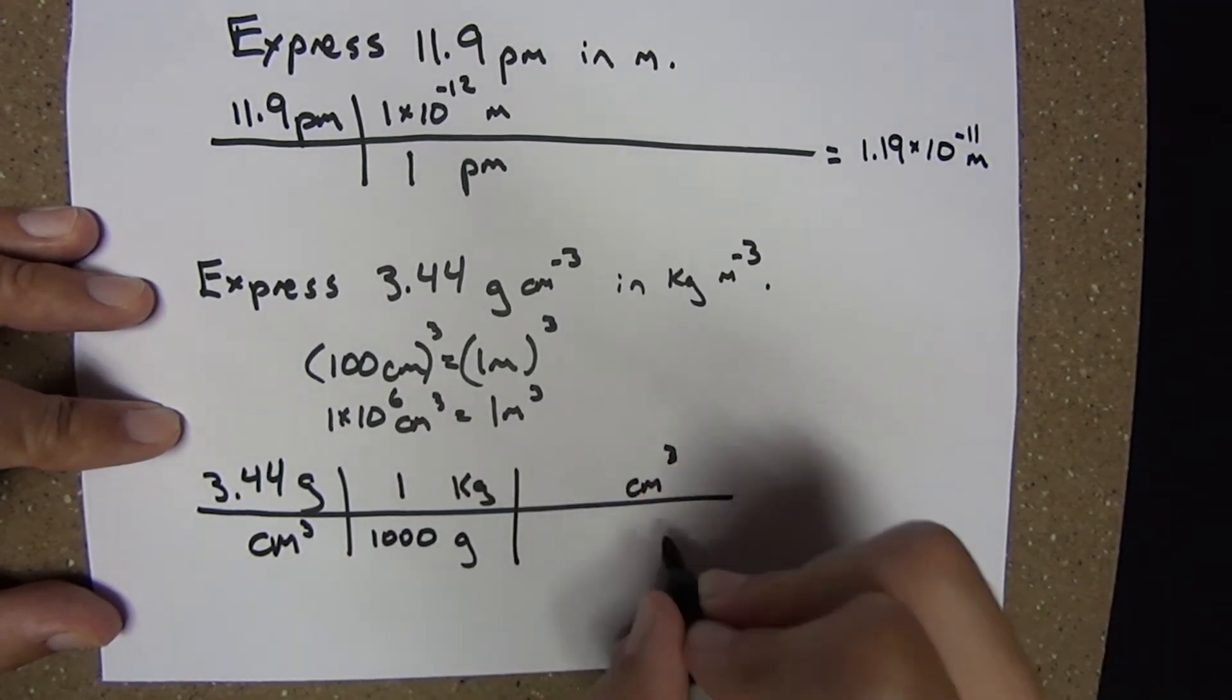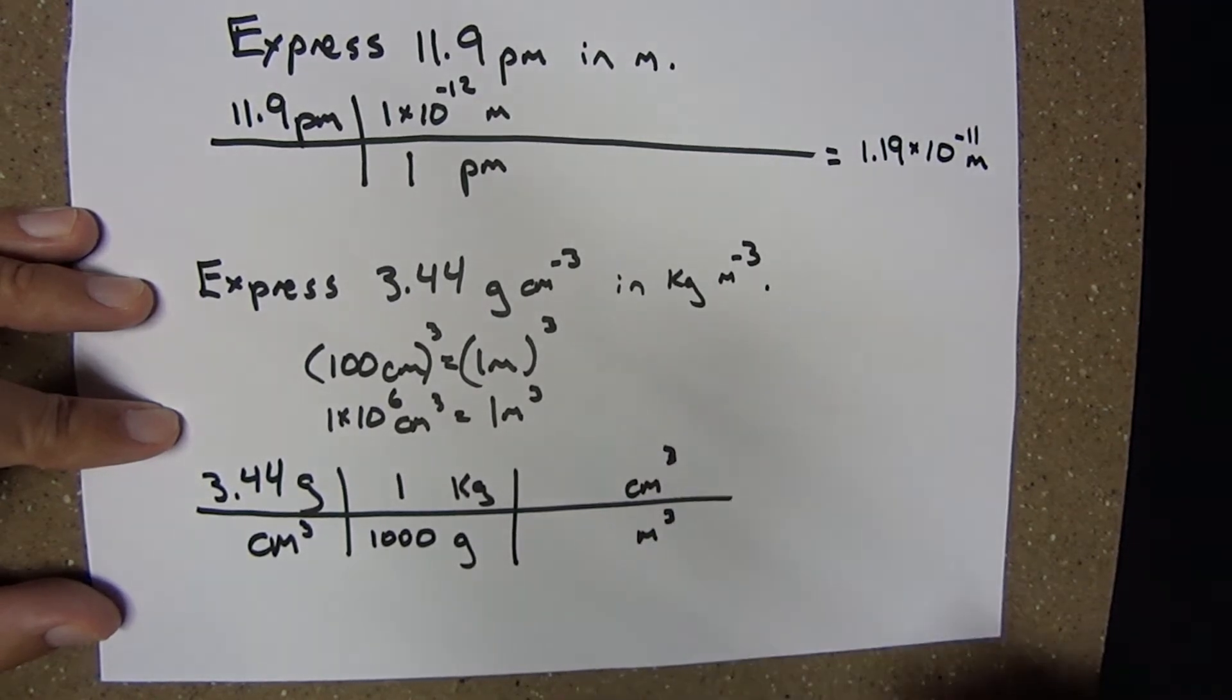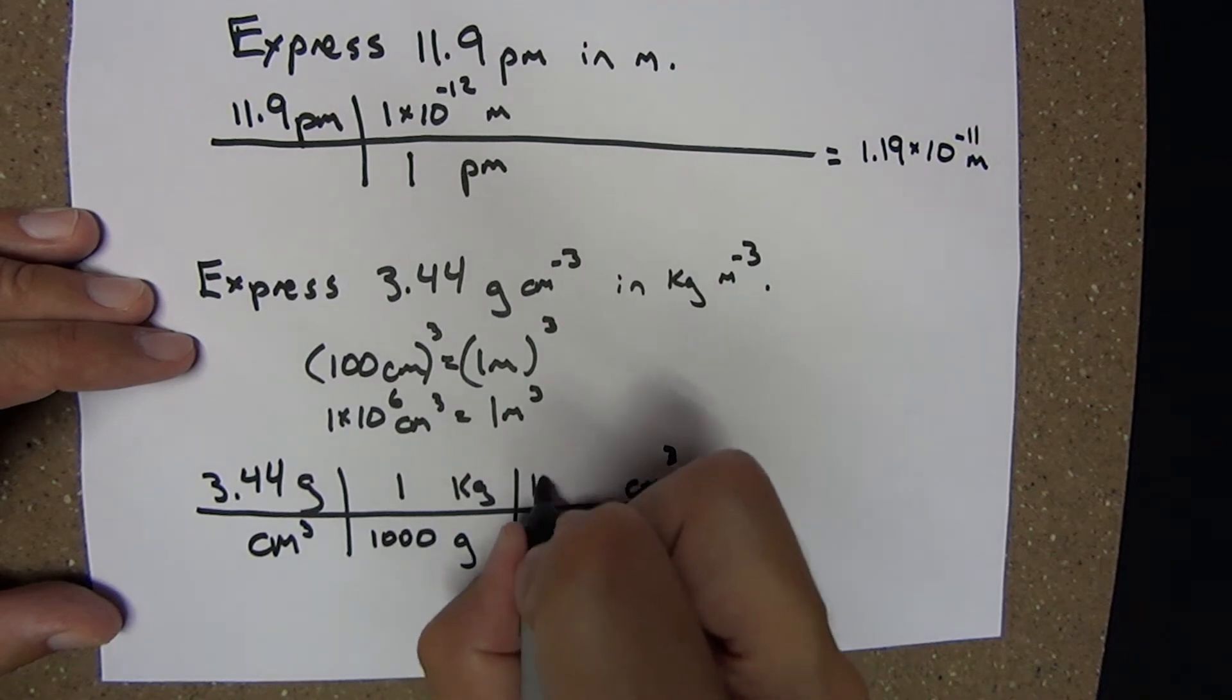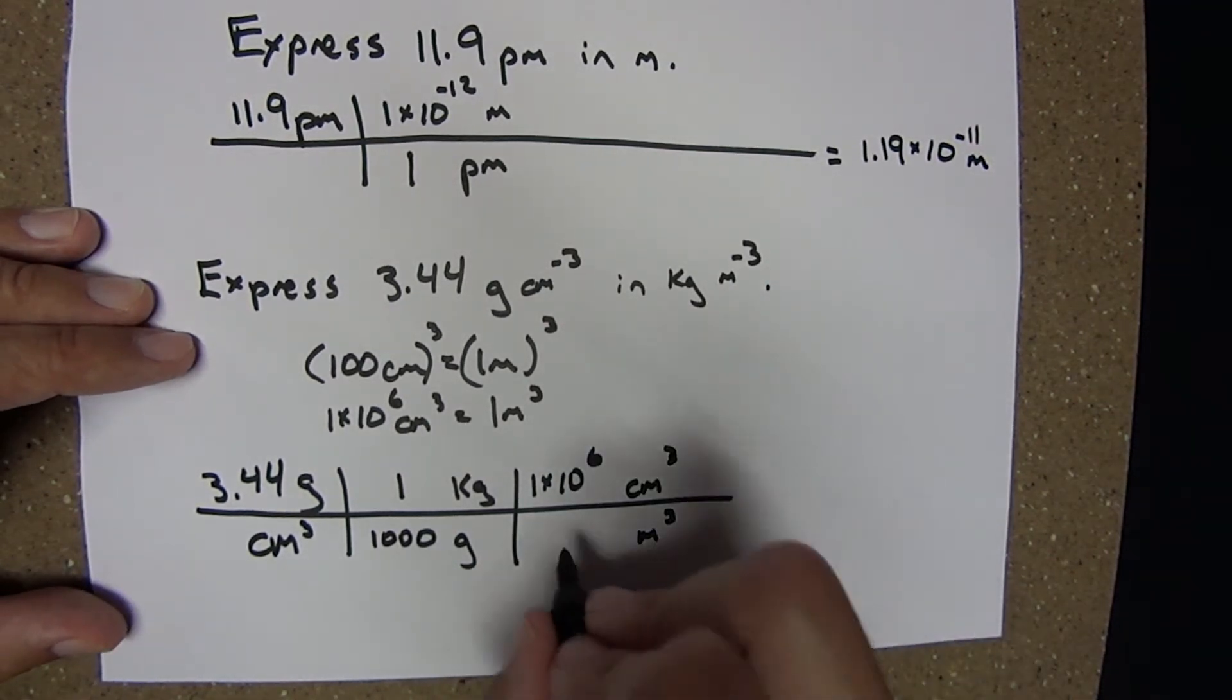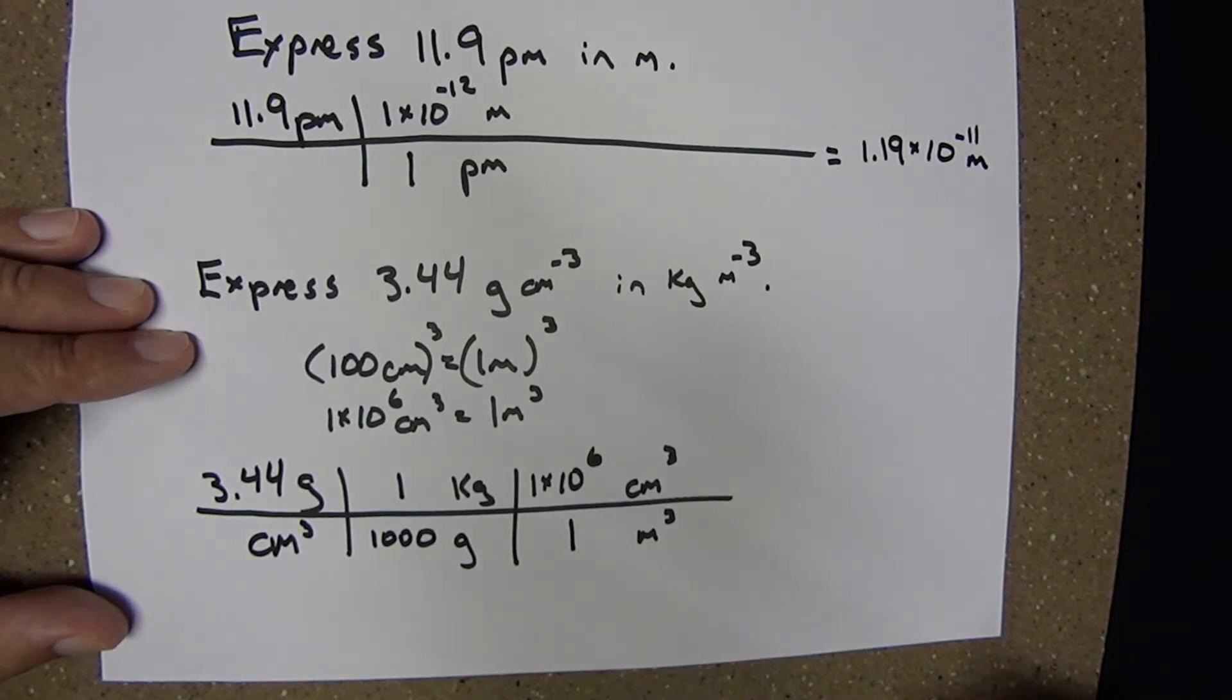We want cubic centimeters to cancel, leaving per cubic meter. We just derived that conversion: 1 × 10^6 cubic centimeters equals 1 cubic meter.